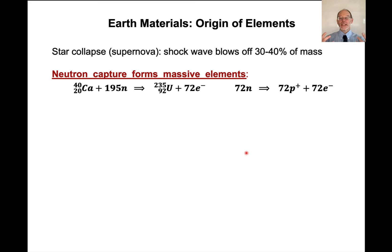And that shock wave blows off about 30 to 40% of the mass of the original star. This creates this enormous neutron flux. And it's this neutron flux that creates almost essentially all of the heavier elements above iron. And so here's a thought experiment.